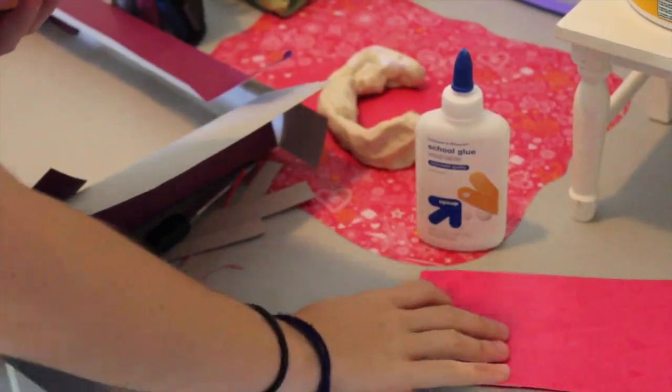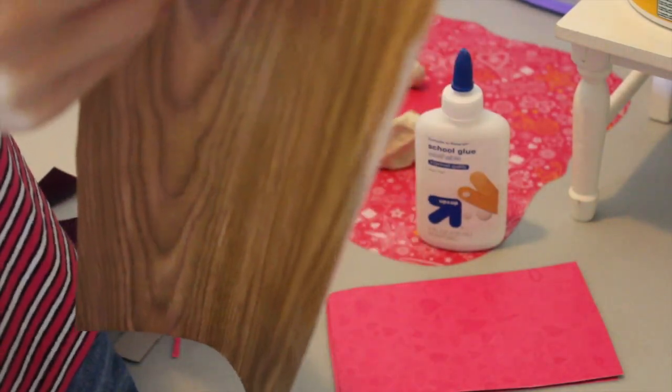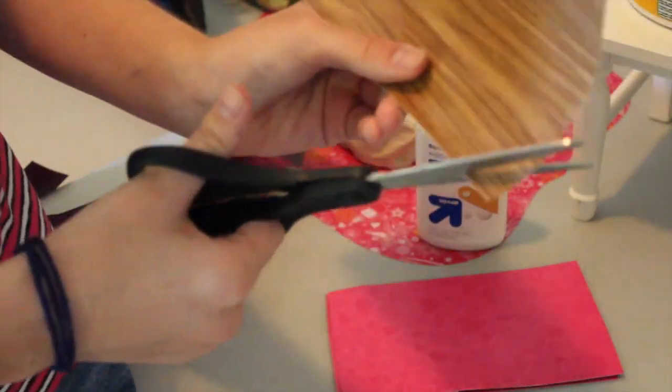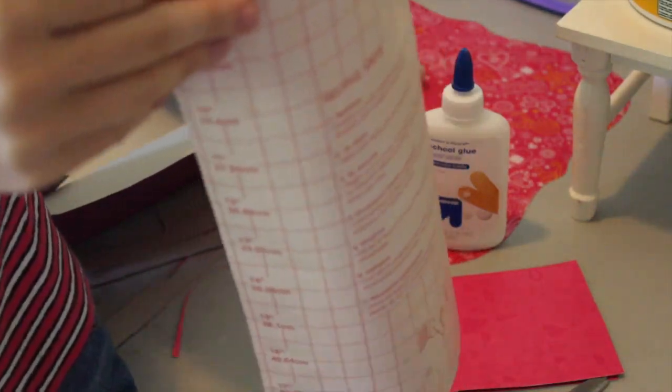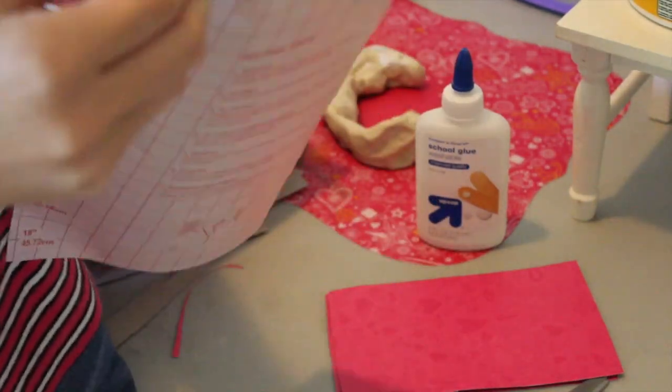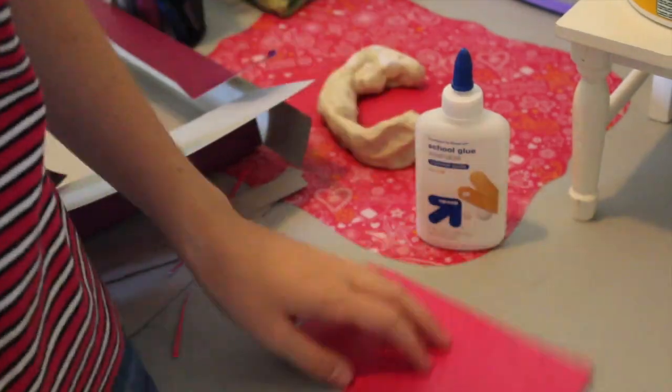So now I'm covering the little cardboard thing with contact paper. I got this at the dollar store. It's just wood contact paper. Contact paper is basically like a giant sticker. You can also just use scrapbooking paper, but this is just what I had.